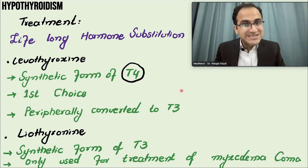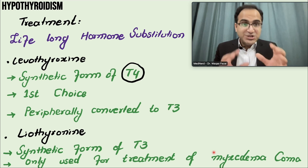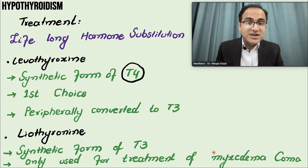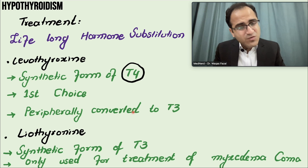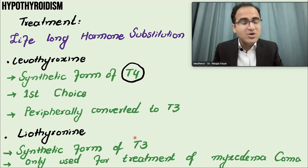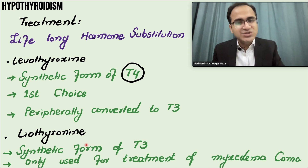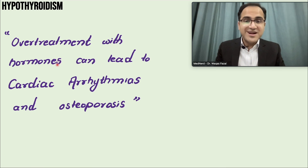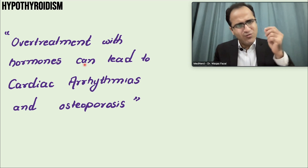In myxedema coma, T4 is converted to T3 in peripheral tissues, and T3 is the more active form. However, in myxedema coma, the enzymes that convert T4 to T3 are deficient. So for that acute emergency, you give liothyronine directly. Remember: overtreatment with thyroid hormones can lead to cardiac arrhythmias and osteoporosis — this is a very high-yield point.